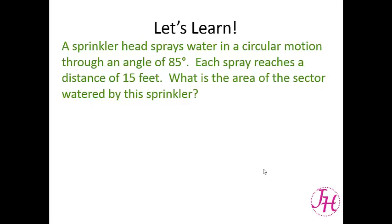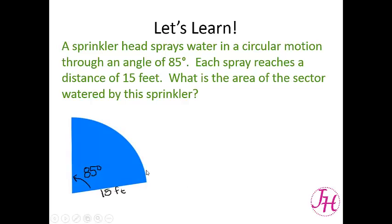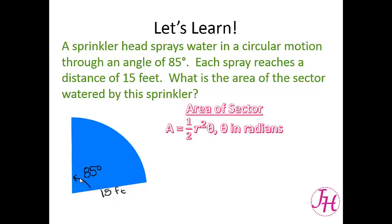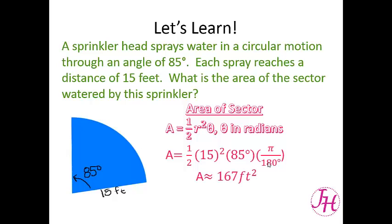A sprinkler head sprays water in a circular motion through an angle of 85 degrees. Each spray reaches a distance of 15 feet. What is the area of the sector watered by this sprinkler? The radius is 15 feet and the central angle is 85 degrees. The area is one half r²θ where θ is in radians. So we have one half times 15 squared times 85 times π over 180. When we multiply that out, we get approximately 167 square feet.